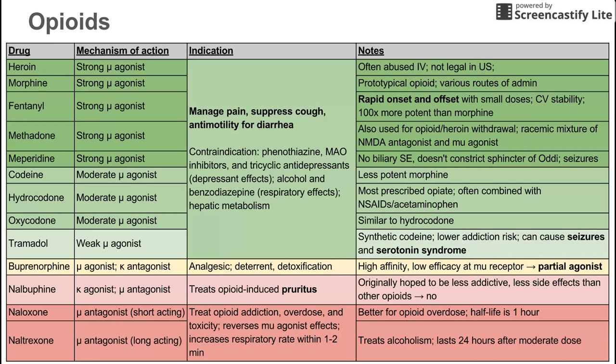All of the drugs in green are used to manage pain, suppress cough, or as anti-motility agents for diarrhea. Oxycodone is very similar to hydrocodone. Tramadol is essentially a synthetic codeine — a weaker mu agonist with a lower addiction risk, probably because it's weaker. Notable side effects include seizures and serotonin syndrome. Tramadol is the weakest of the drugs in green.